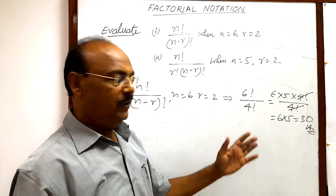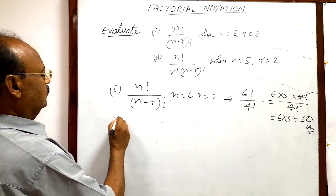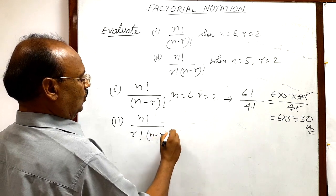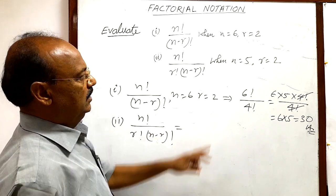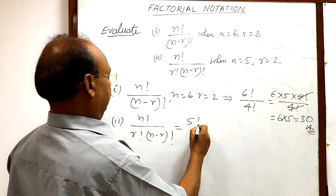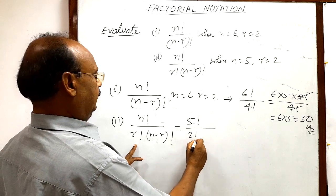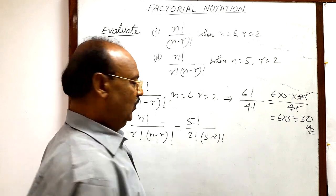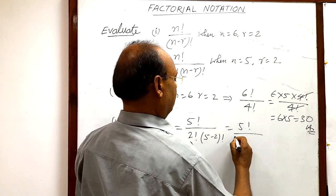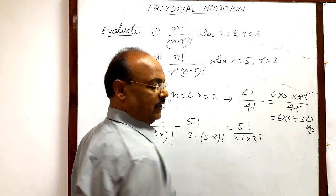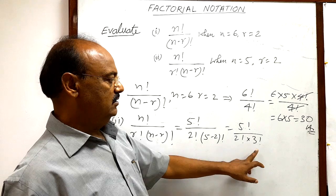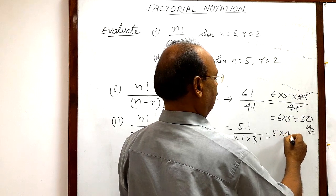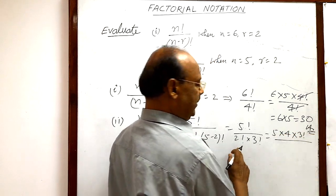The second question is n factorial divided by r factorial into (n minus r) factorial. With n equal to 5 and r equal to 2, the numerator is 5 factorial and the denominator is 2 factorial into (5 minus 2) factorial, that is 3 factorial. So 5 factorial can be written as 5 into 4 into 3 factorial.